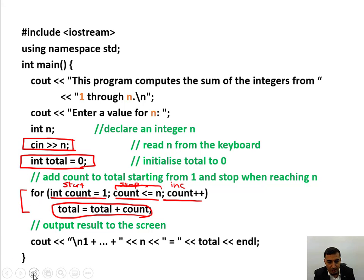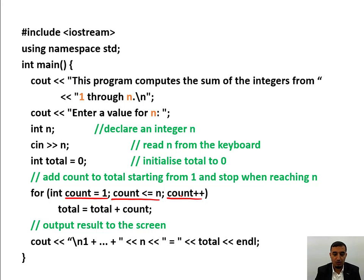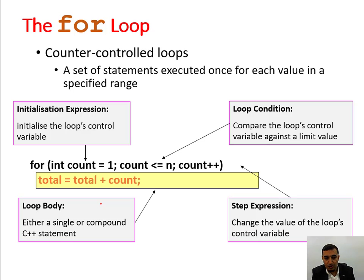Once more: this is my initial value, this is my stopping condition, and this is my increment. Three things must always be present when it comes to loops. A sample run: if n equals 5, I get 15; if n equals 100, I get 5050.